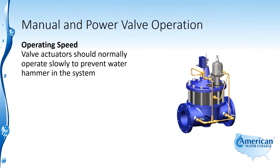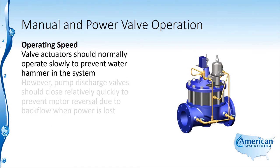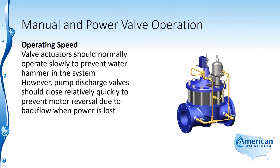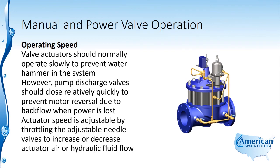Valve actuators should normally operate slowly to prevent water hammer in the system. However, pump discharge valves should close relatively quickly to prevent motor reversal due to backflow when power is lost. Actuator speed is adjustable by throttling the adjustable needle valves to increase or decrease actuator air or hydraulic fluid flow.